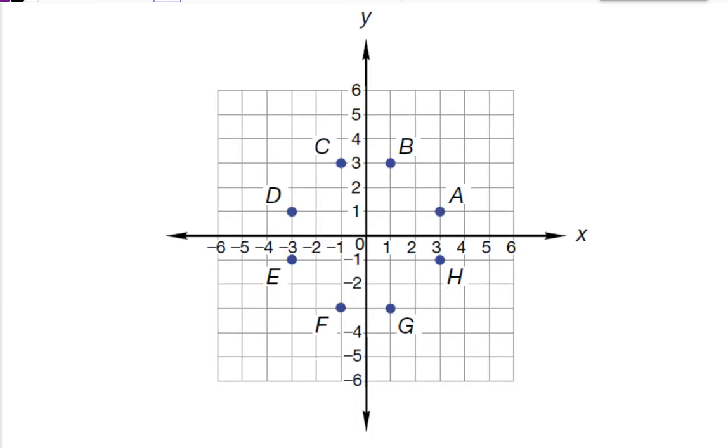So we need to write down where these places are located. First of all, where is point A? Well I start at the origin and I count over on the x first, 1, 2, 3, and then the x is 3, and then I'm going to go up 1 to get to the A. So it's going to be 3, 1.